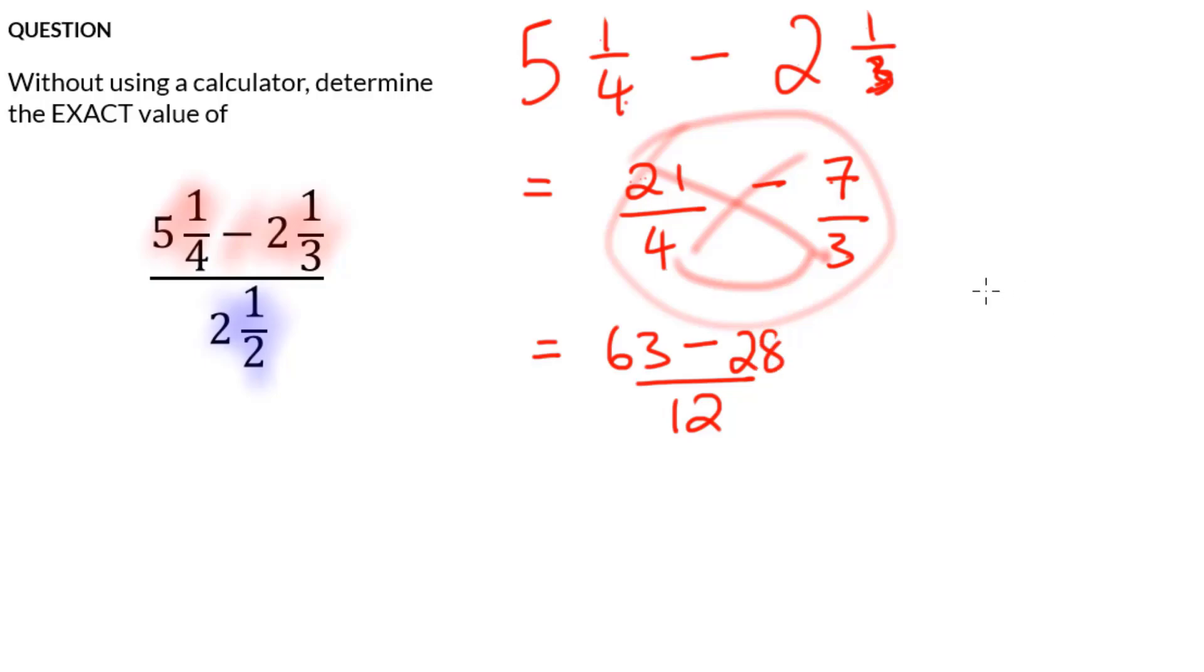Now what is 63 minus 28? Well, we can take one from the six. So that would leave us with five and we carry the one here. 13 minus eight is five and five minus two is three. So that would be 35 over 12.